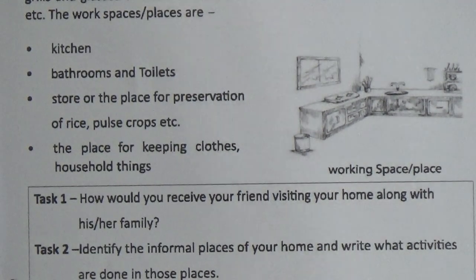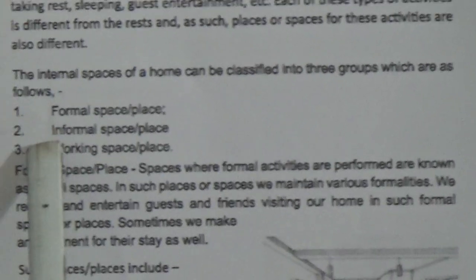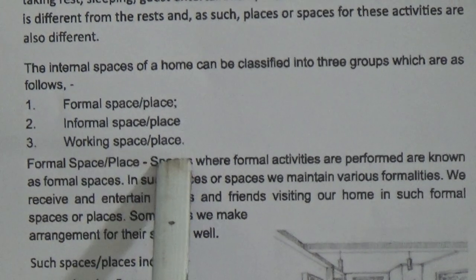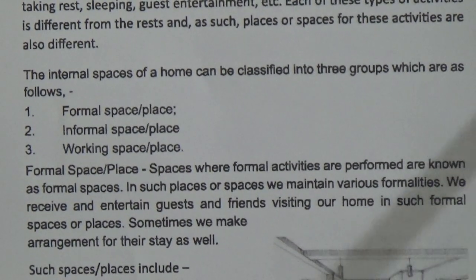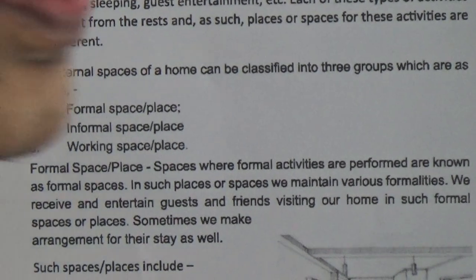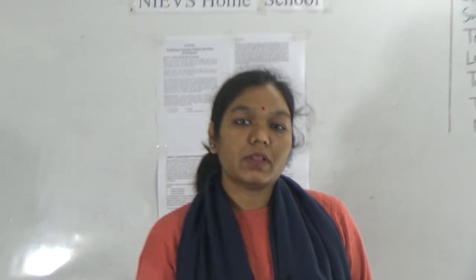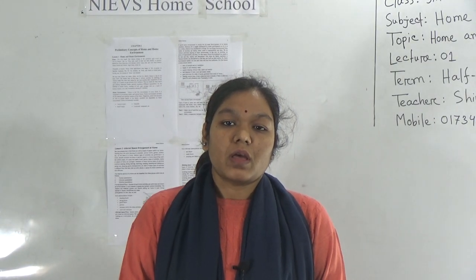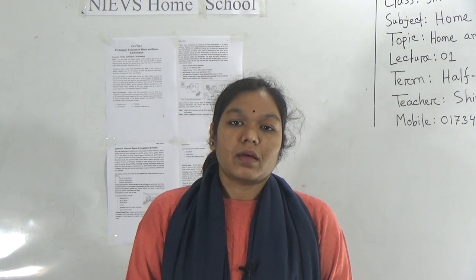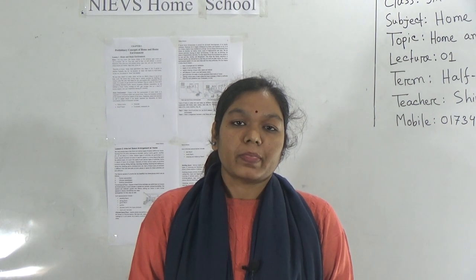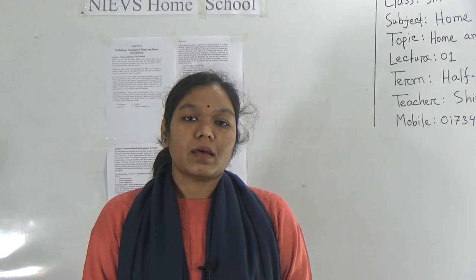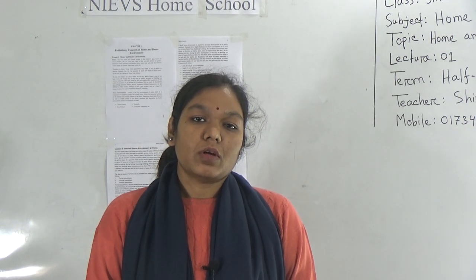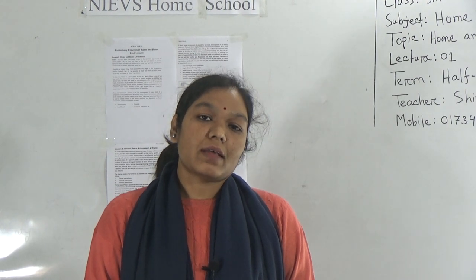So, there are three types of spaces in our home: formal spaces, informal spaces, and working spaces. They are different from one another. From this chapter, we have learned that home is a place where we can live peacefully, and we have to maintain our home environment, keeping it neat and clean. We must do our duties and responsibilities as members of a family.